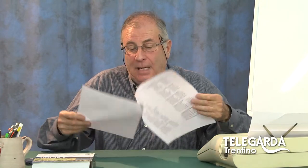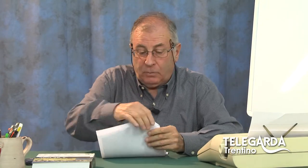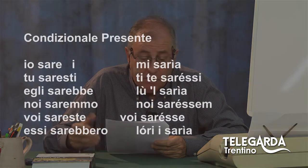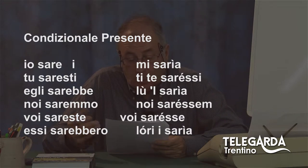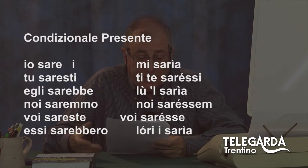Questi sono i tempi del congiuntivo. Adesso arriviamo al condizionale. Siamo verso la fine, e ho detto che voglio mantenere sempre la veste didattica di questa trasmissione, a cadenza abbastanza abituale. Il condizionale ha due tempi: il presente e il passato. Io sarei, tu saresti, egli sarebbe, noi saremmo, mi raccomando le due M altrimenti 'noi saremo' finirebbe nel futuro. Noi saremmo, voi sareste, essi sarebbero.